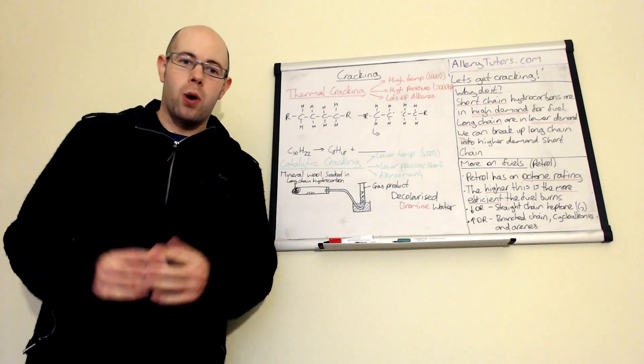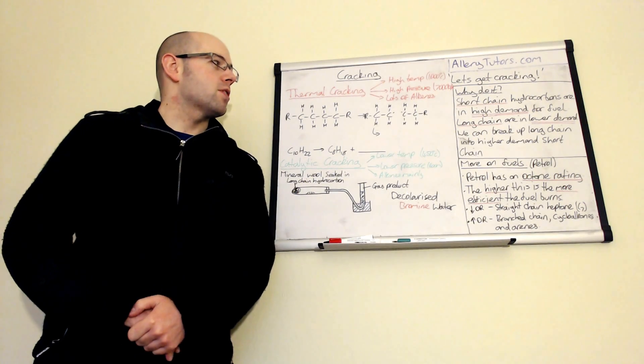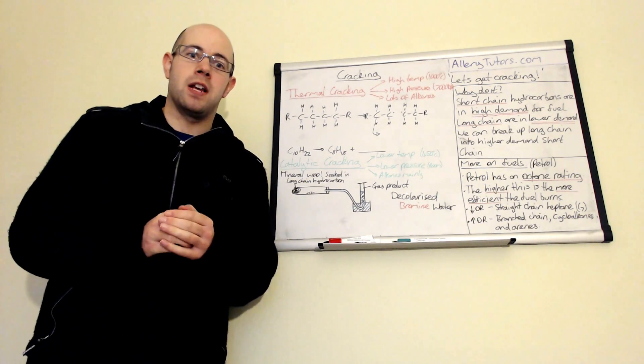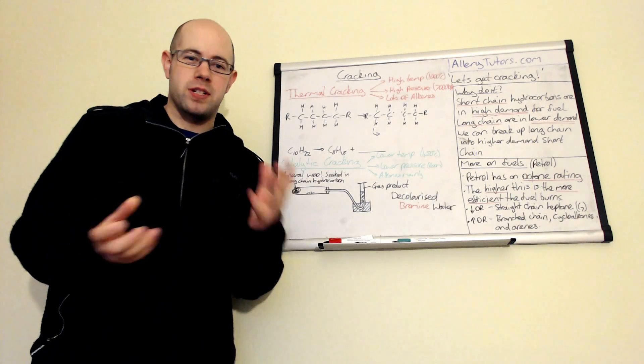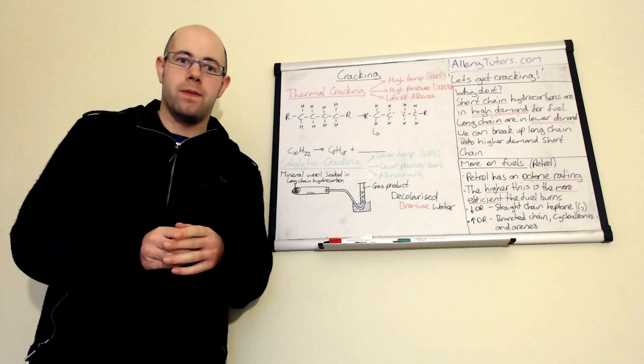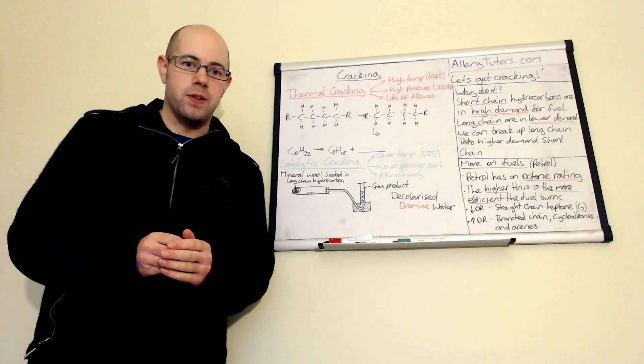So let's start with what we mean by cracking. Basically, short chain hydrocarbons are really valuable. Short chain hydrocarbons, for example around C7, C8, are mostly used for fuel and the vast majority of crude oil dug out of the ground is used for fuels.